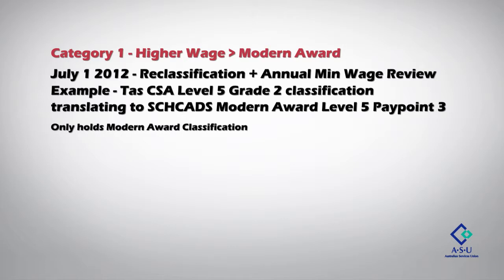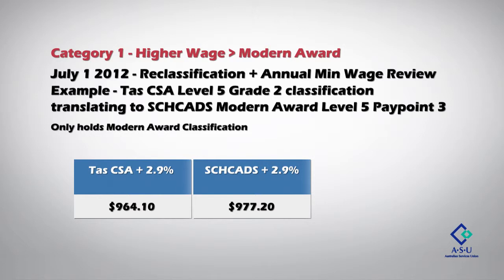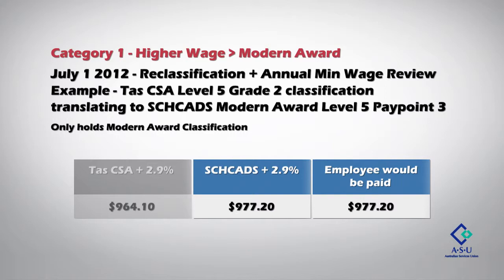Now let's look at what this means in dollars and cents for each category as of July and December 2012. Using the TAS CSA Award Level 5 Grade 2 classification, translating to a SCHADS Modern Award Level 5 Pay Point 3. First, category one, where the rate of pay for the modern award classification you translate to is higher from July 2012 — if this is you, you only hold that classification. On July 1, 2012, there was a 2.9% increase from the annual minimum wage review. The TAS CSA award pay rate then went to $964.10 per week. When applied to the SCHADS Modern Award level, the pay rate was $977.20 per week. The new classification and pay rate is the modern award, as it's higher.